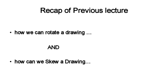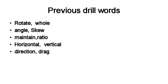In the last lecture, we learned why and how we can rotate a drawing, how we can draw in different directions, how to skew and maintain the perfect position, and the rate of the horizontal — that is, the landscape orientation.